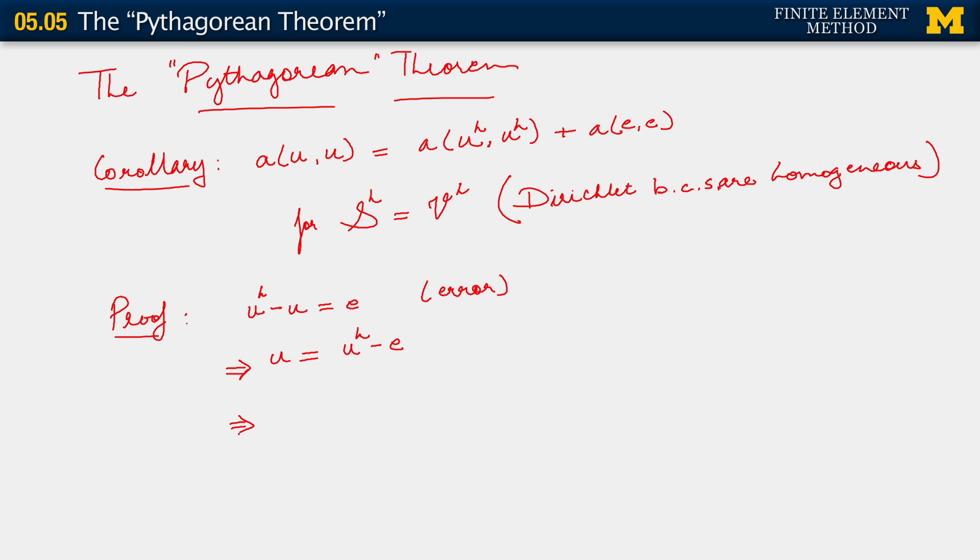In order to start looking at this let us consider the following. For this setting, we have u_h minus u equals e. That's our definition of the error. The error in the finite element solution. And from this, we can therefore write that u equals u_h minus e.